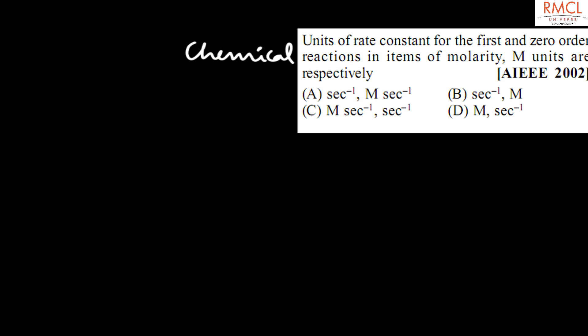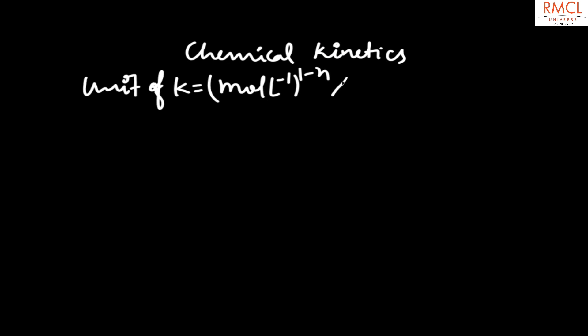The given question is from IEEE 2002. The question asks for the units of rate constant for first and zero order reactions in terms of molarity M. The unit of K is equal to mol·liter⁻¹·(1−N)·second⁻¹, where N is the order of reaction.